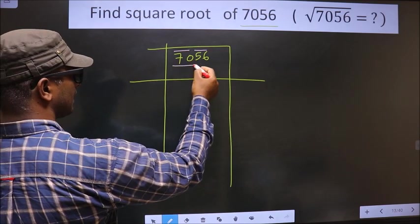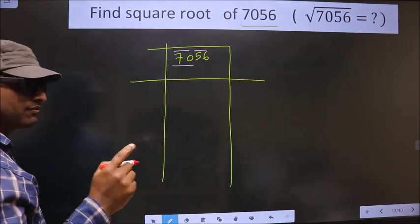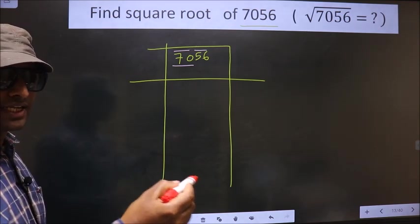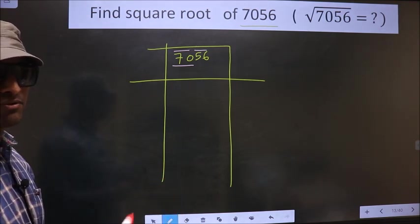Now here we have 70. 70 is not a perfect square, so now we should look. 70 will lie between which two perfect square numbers.